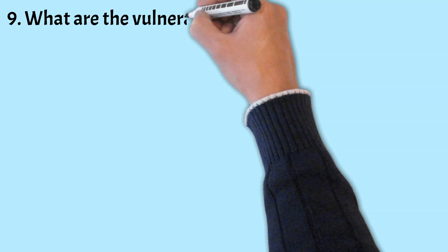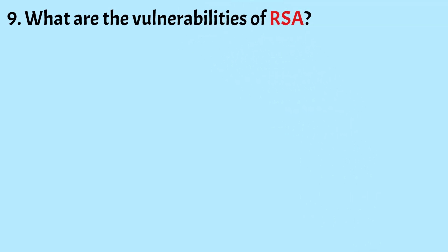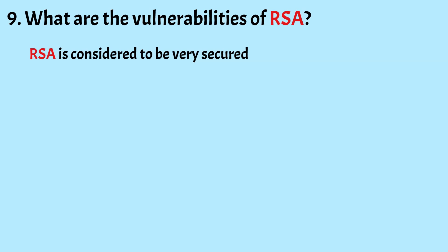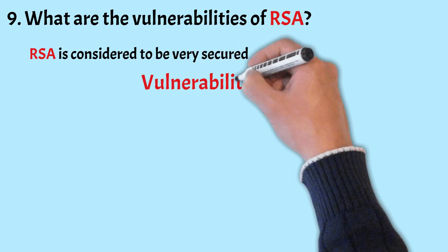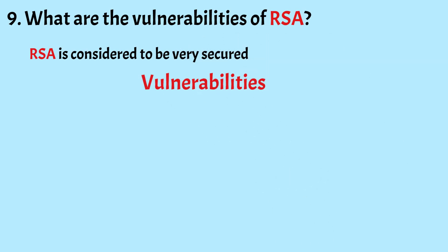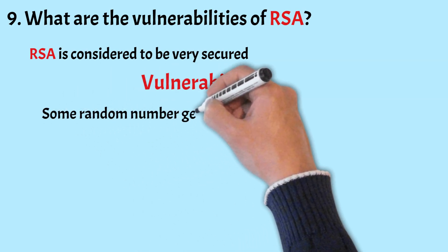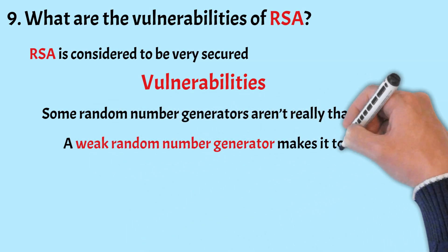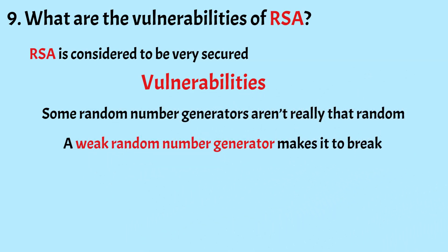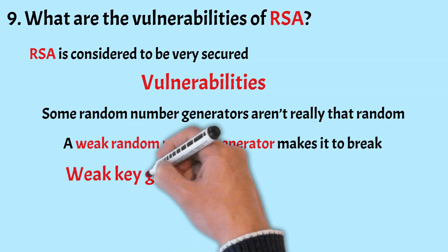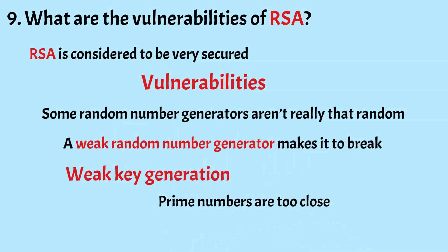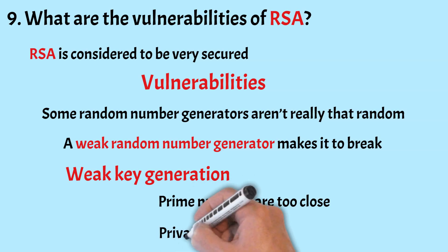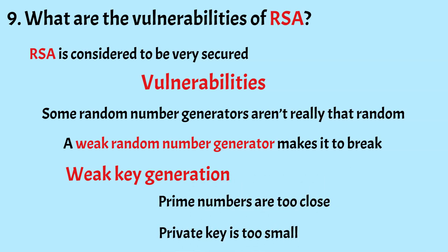What are the vulnerabilities of RSA? Even though RSA is considered to be very secure, there are still vulnerabilities that can be exploited by attackers. Some random number generators aren't really that random — a weak random number generator makes it easier for attackers to factor the keys and break the encryption. Weak key generation happens if the prime numbers are too close, in which case the key can easily be identified. Similarly, when one of the numbers making up the private key is too small, it makes it easy to discover.